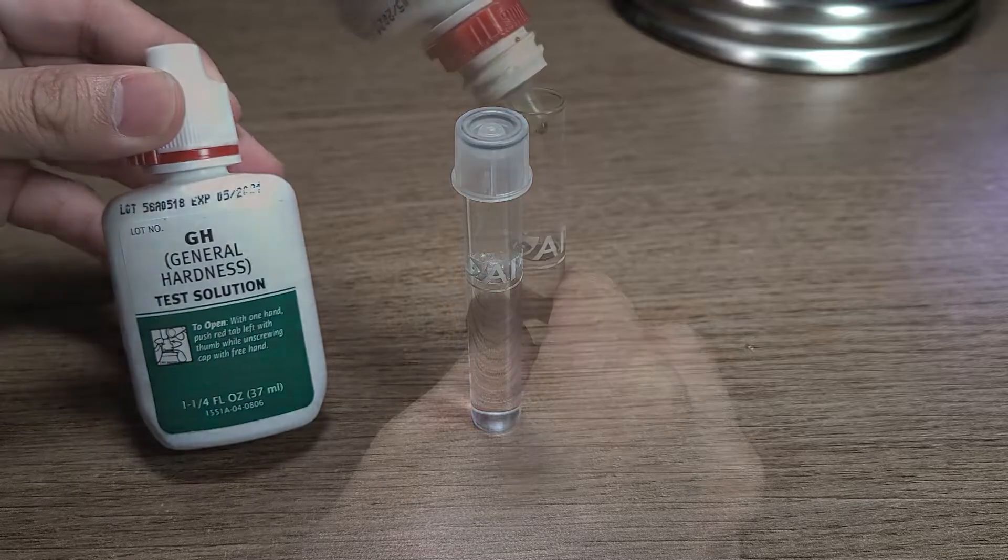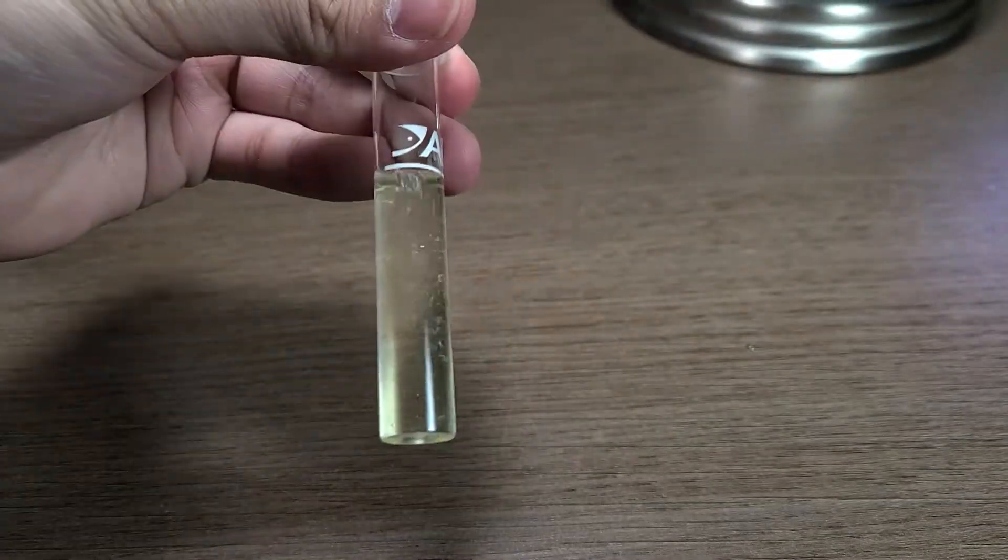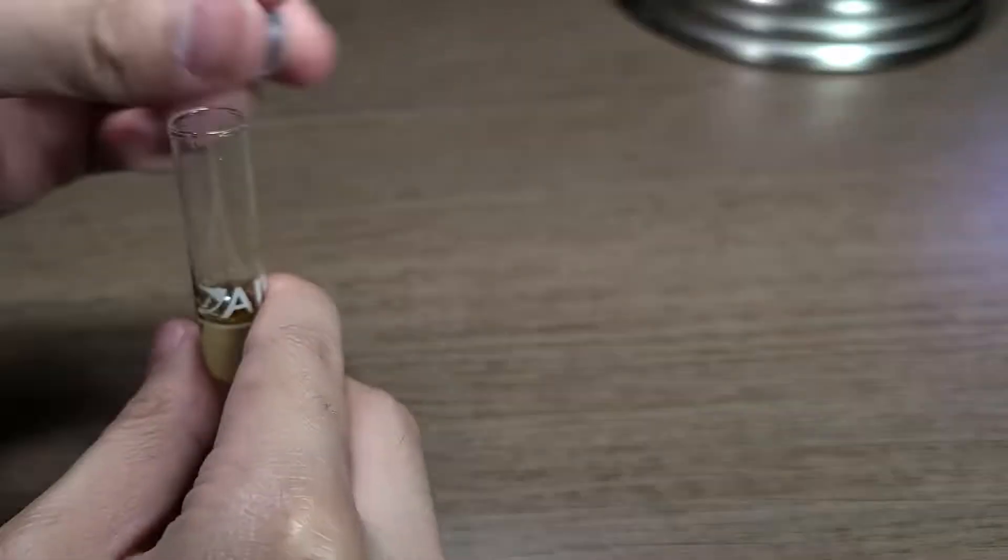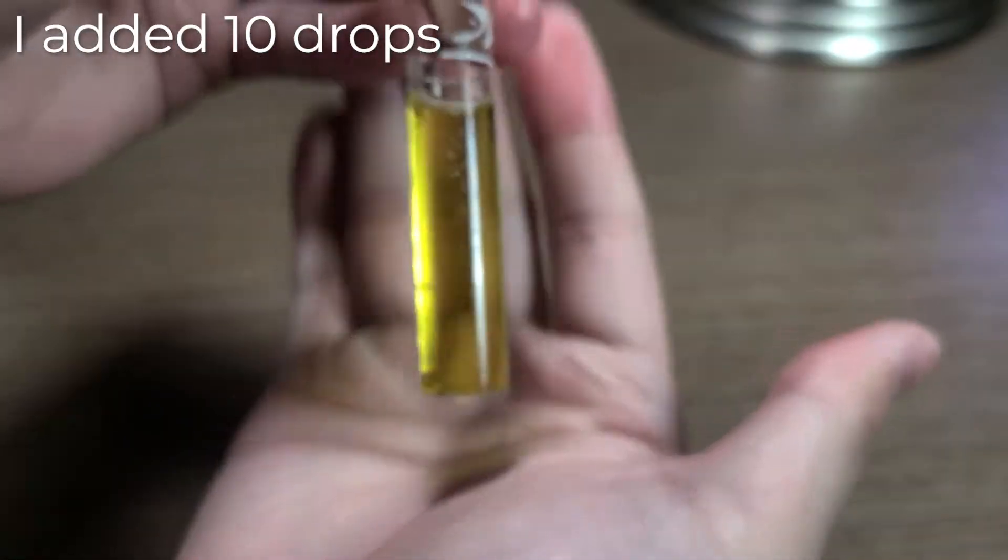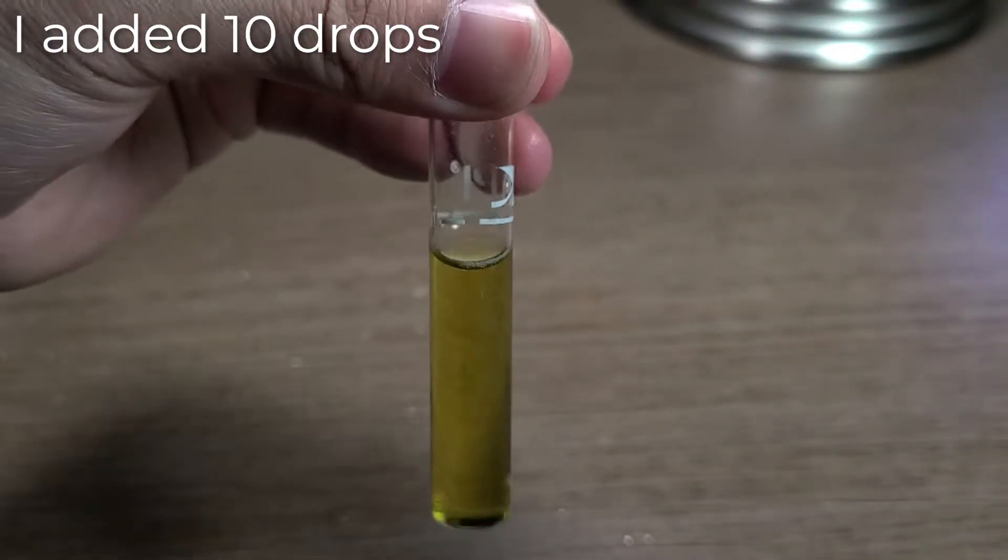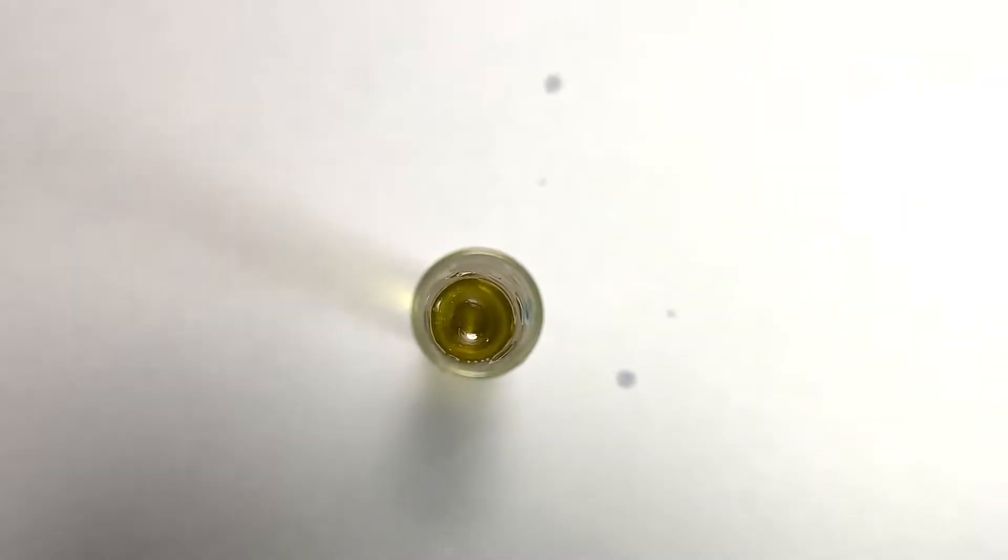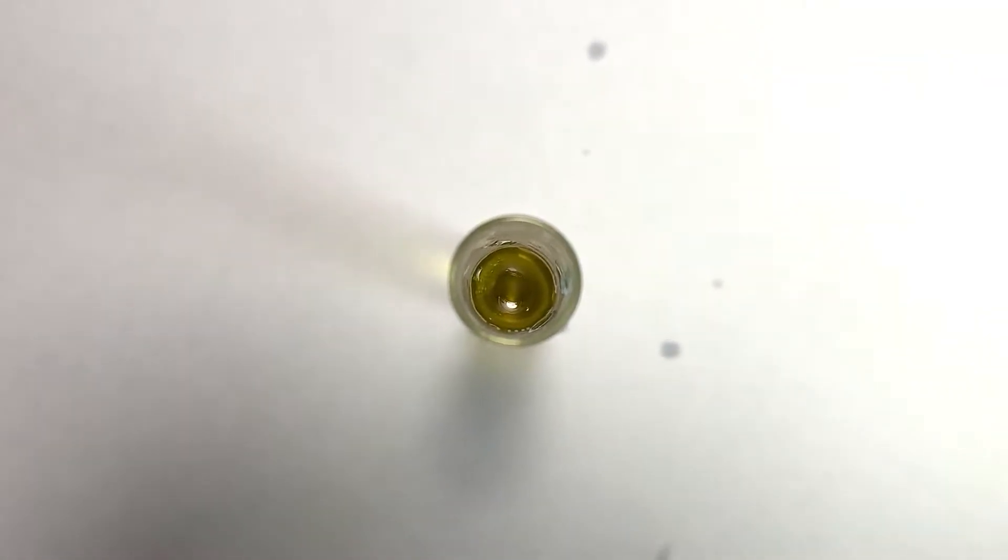For GH, add one drop, cap the tube, and shake. Repeat this process until the water turns from an orange-yellow to a light green. If you're having difficulties discerning the color after the first drop, remove the cap and look down at the tube over a white background.